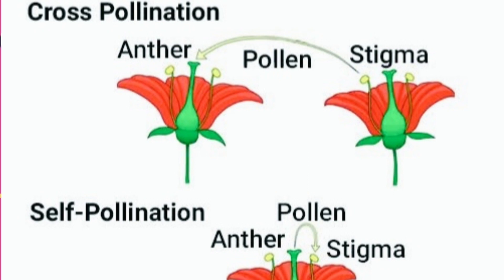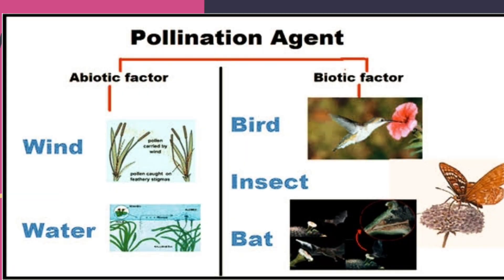In cross pollination, the pollen grains from the anther of one flower get transferred to the stigma of another flower. In self pollination, the pollen grains from the anther get transferred to the stigma of the same flower. This is the main difference between cross pollination and self pollination.